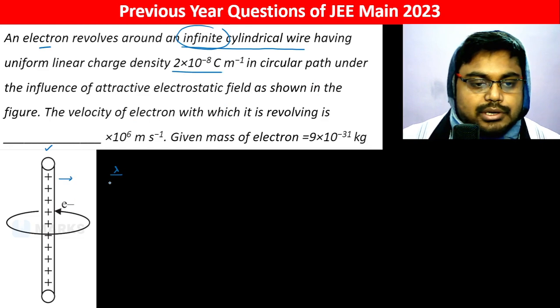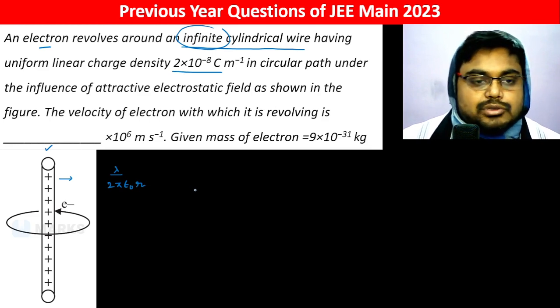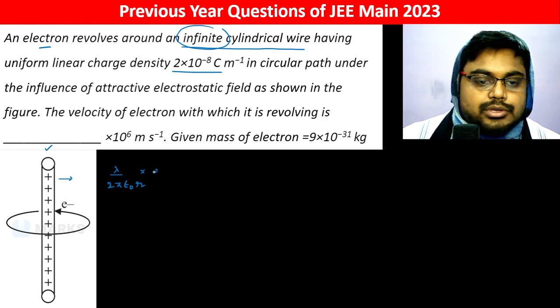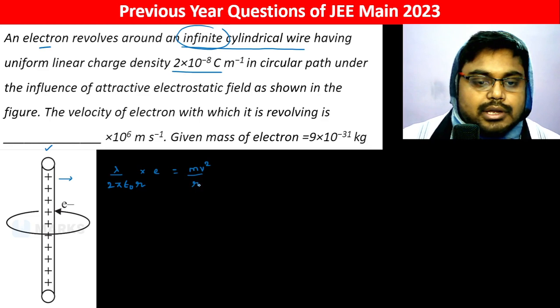The electric field is lambda divided by 2πε₀R. The force on the electron will be the electric field times the charge. This should be equal to mv²/R, the centripetal force.